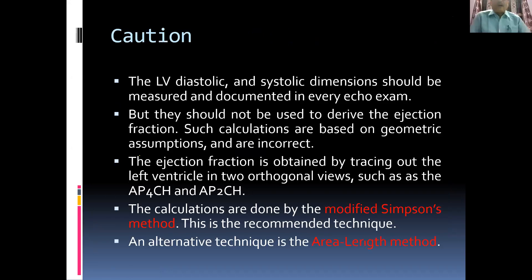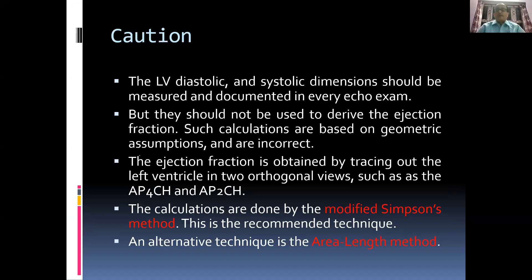The LV diastolic and systolic dimensions should be measured and documented in every echo examination, but they should not be used to derive the ejection fraction, as such calculations are based on geometric assumptions and are incorrect. The ejection fraction is obtained by tracing the left ventricle in two orthogonal views — the apical four-chamber and two-chamber views. Calculations are done by the modified Simpson method, which is the recommended technique.